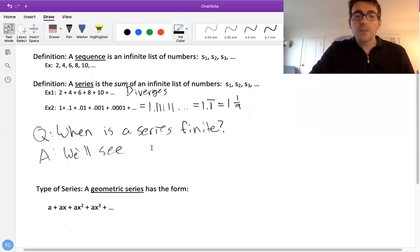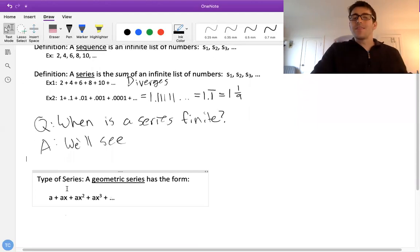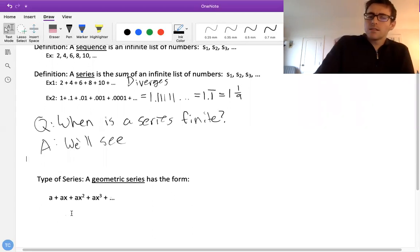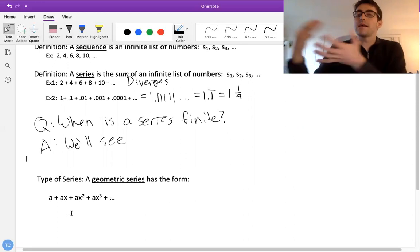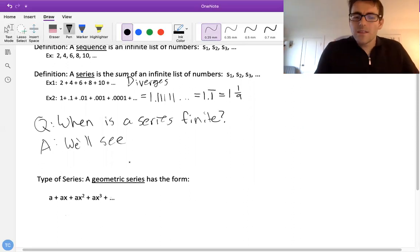So a geometric series is something of this form. We've got a = ax + ax^2 + ax^3 + etc. Which written this way looks weird.